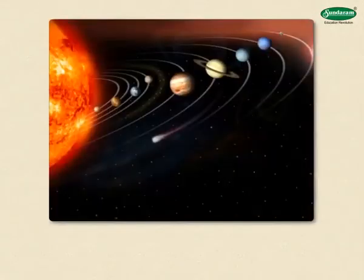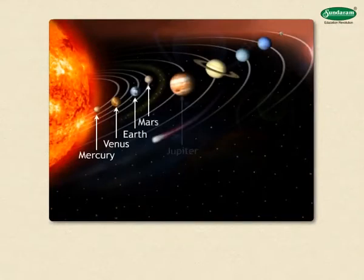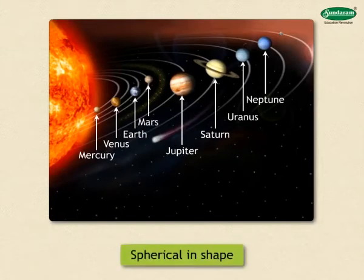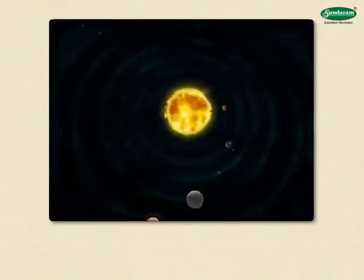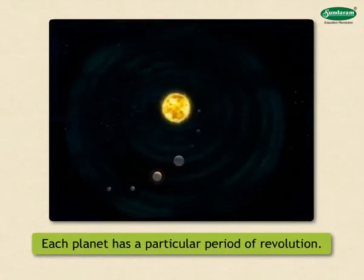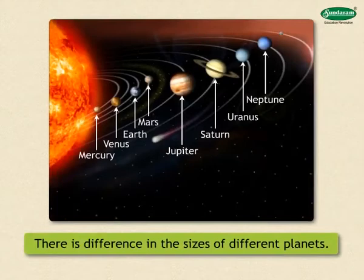The names of the planets in the solar system are Mercury, Venus, Earth, Mars, Jupiter, Saturn, Uranus and Neptune. These planets are generally spherical and revolve around the sun in their own particular orbits. Each planet has a particular period of revolution. There is a difference in the sizes of different planets.